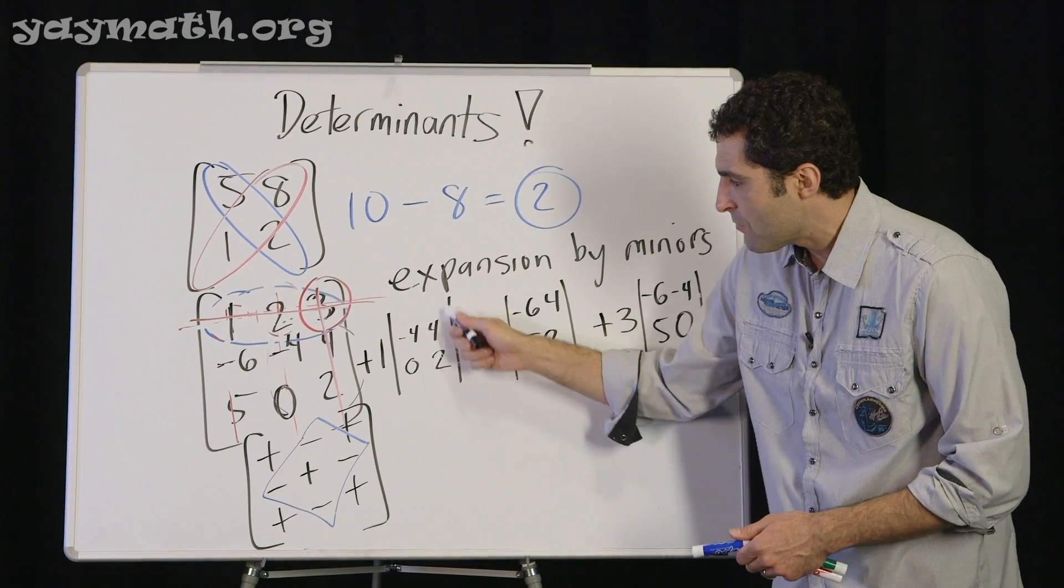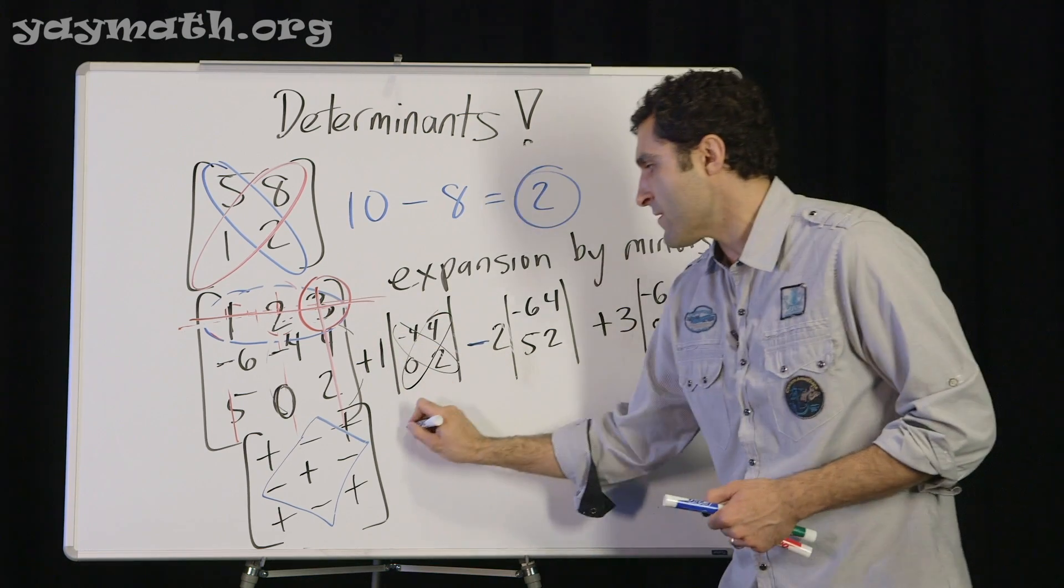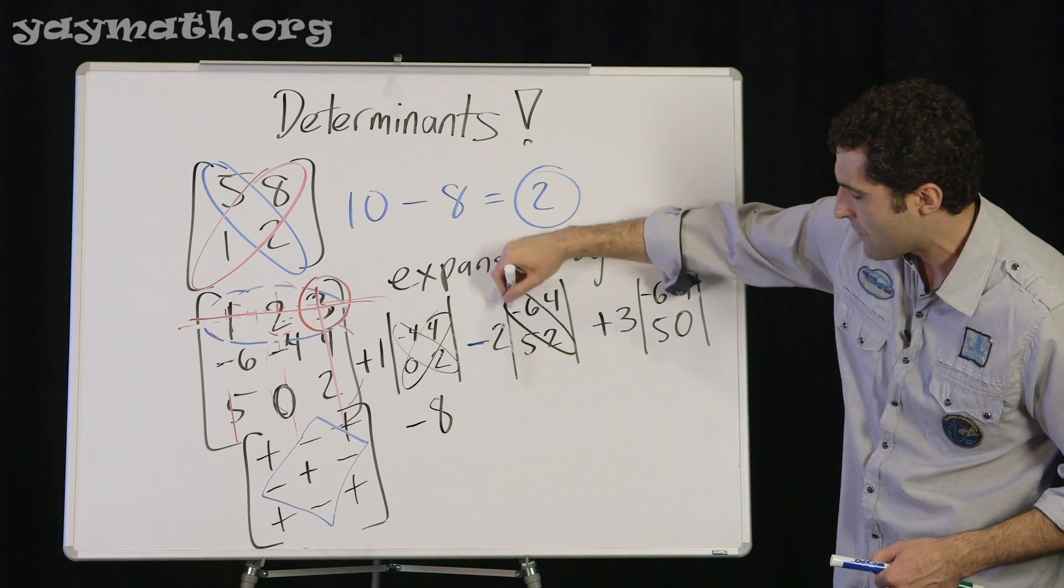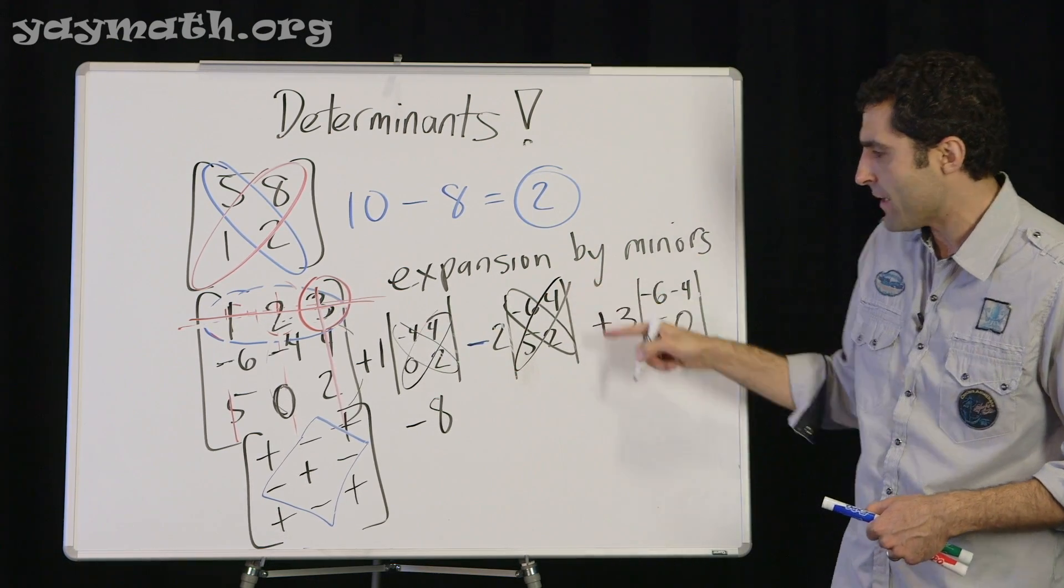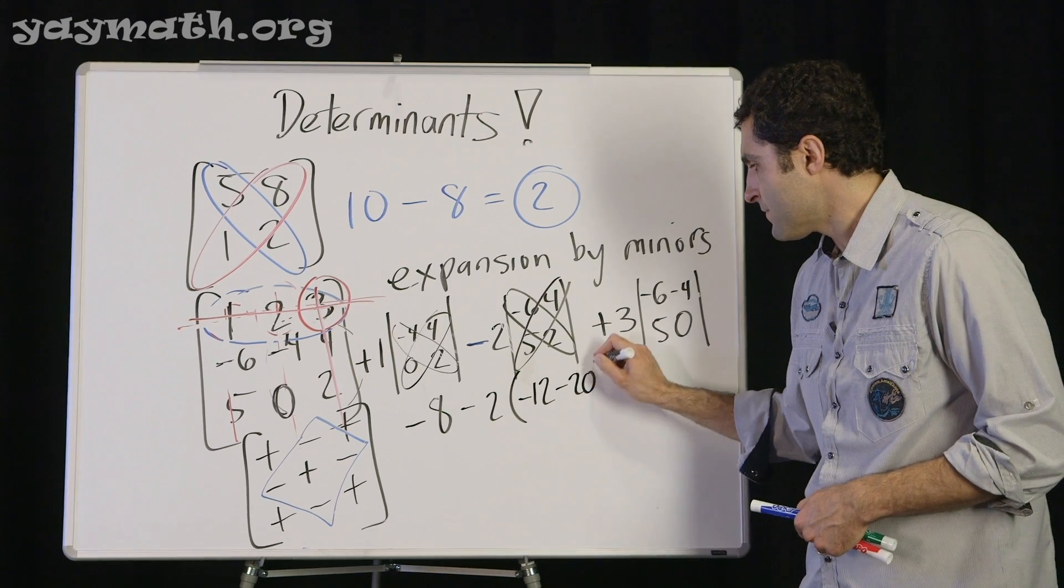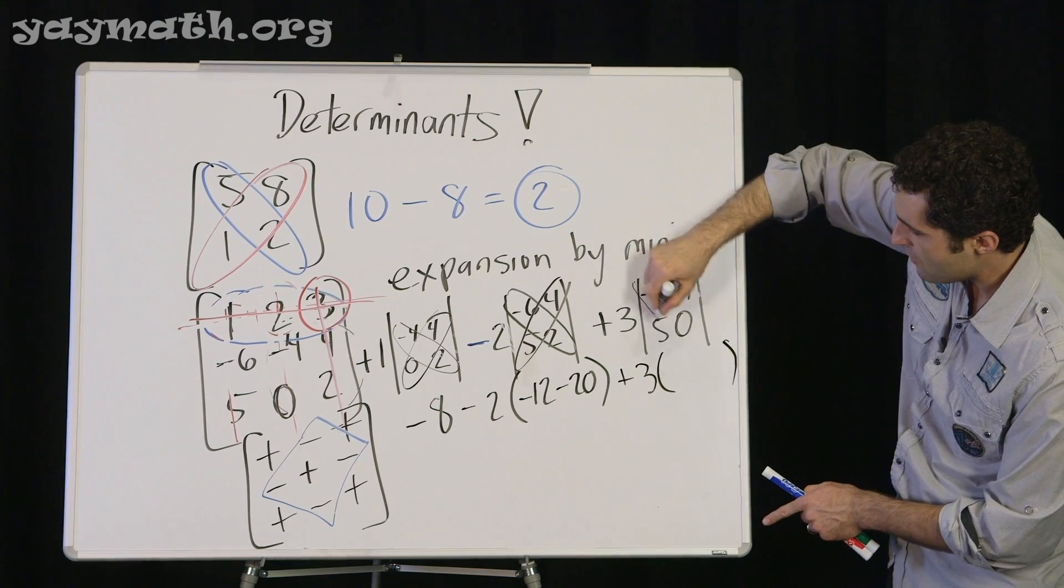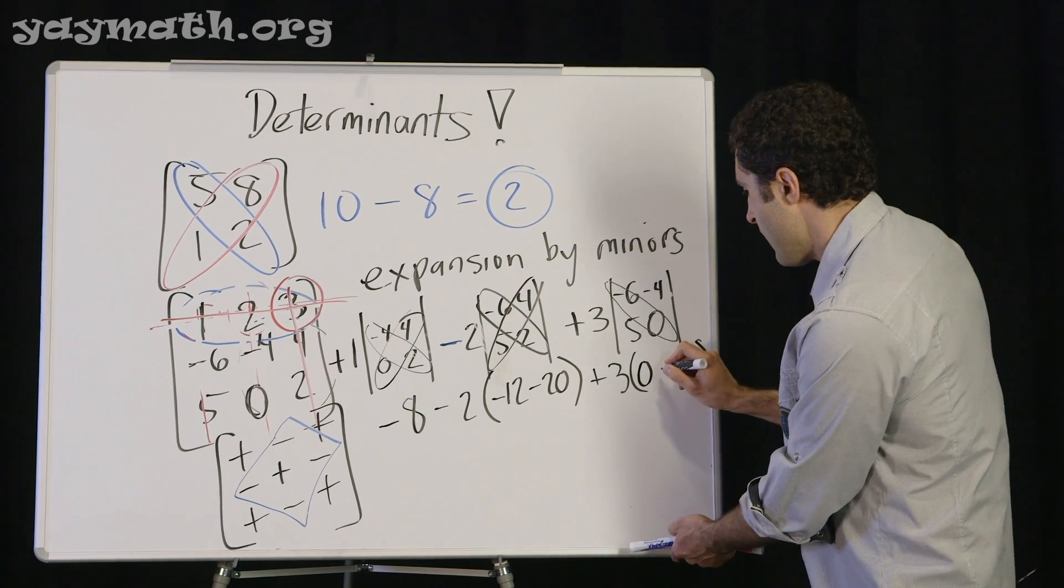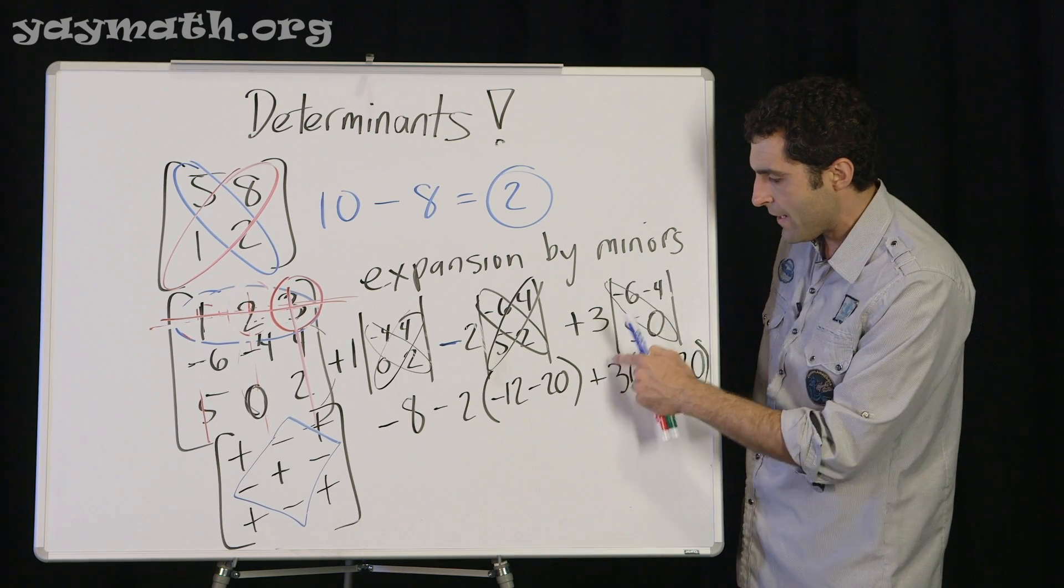Here we go. One times this is negative 8 plus 0. Negative 8 plus 0, multiplying those. And that's negative 8 times 1 is that. Let's go over here. This is negative 12 minus 20, right? It's always minus. So negative 12 minus 20, so it's negative 2 times negative 12 minus 20. And then over here, 3 times 0 minus negative 20, 0 minus negative 20, because that's 5 times negative 4. So 0 minus negative 20.